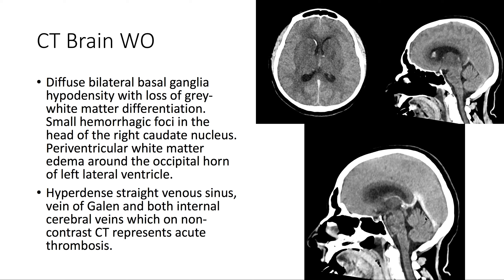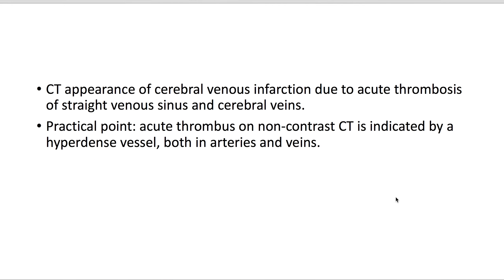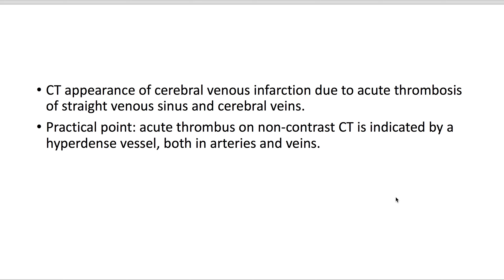There's also a hyperdense straight venous sinus, vein of Galen, and both internal cerebral veins, which on non-contrast CT represents acute thrombosis. Acute thrombus on non-contrast CT is indicated by a hyperdense vessel, both in arteries and veins.